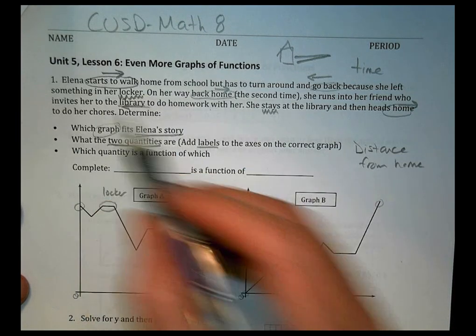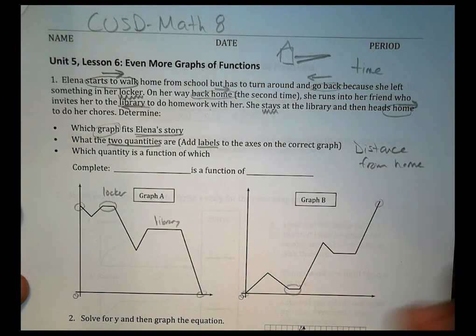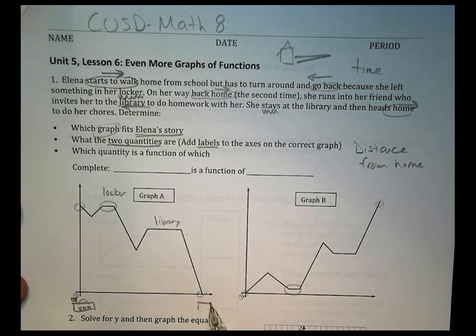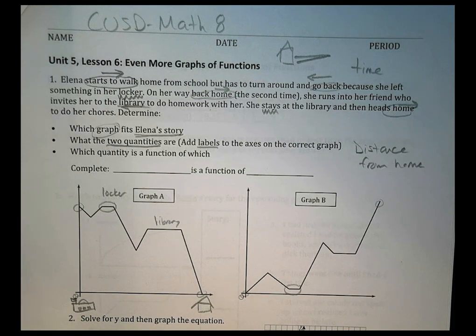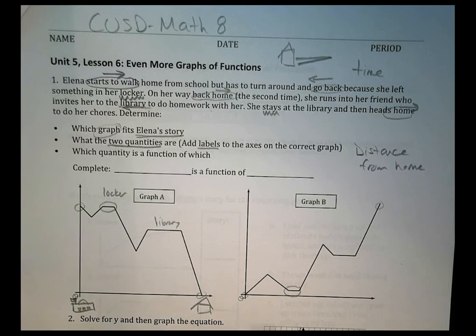And what's changing over time is going to be her distance from home. Because that's her goal. Her goal is to get home and she eventually does there. So in our case here, we can think about this being the school. Little school. There's our school. Nice big old school there. And maybe over here, this becomes her house. So we can think about it being the distance from school to her house. And that's where she's going there.